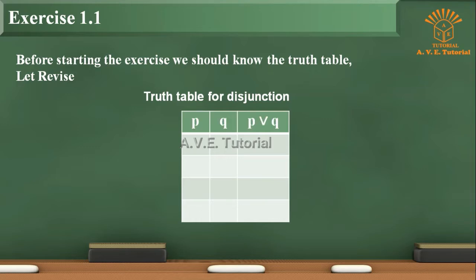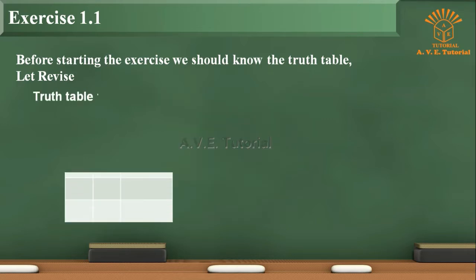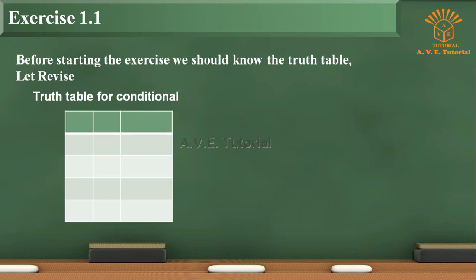Truth Table for Disjunction. First row: P, Q, P or Q. Second row: T, T, T. Third row: T, F, T. Fourth row: F, T, T. Fifth row: F, F, F.